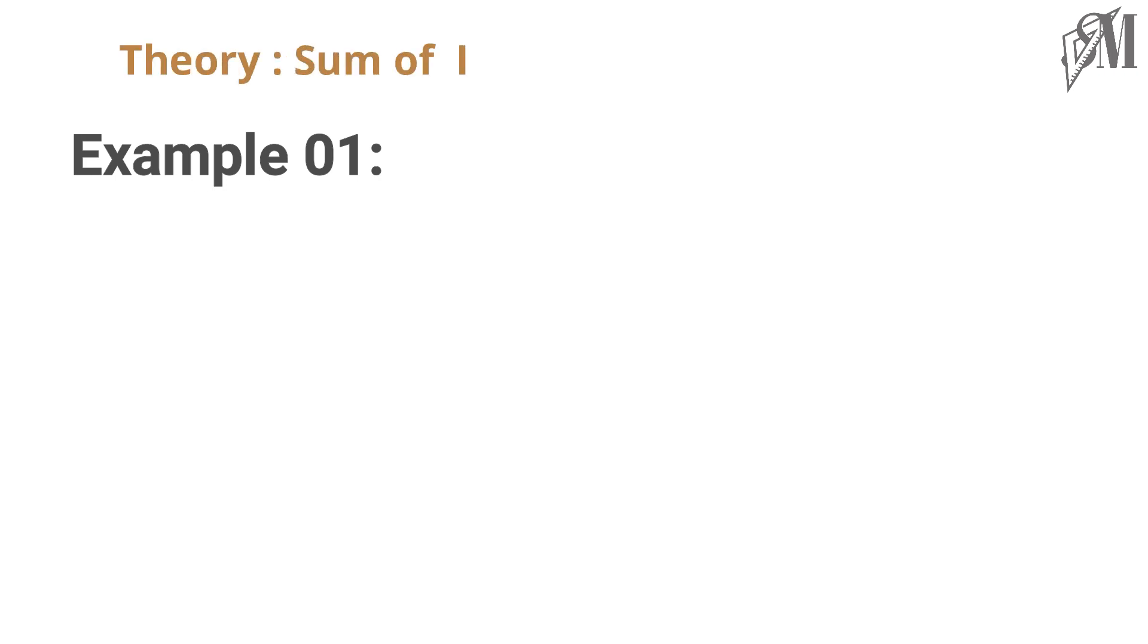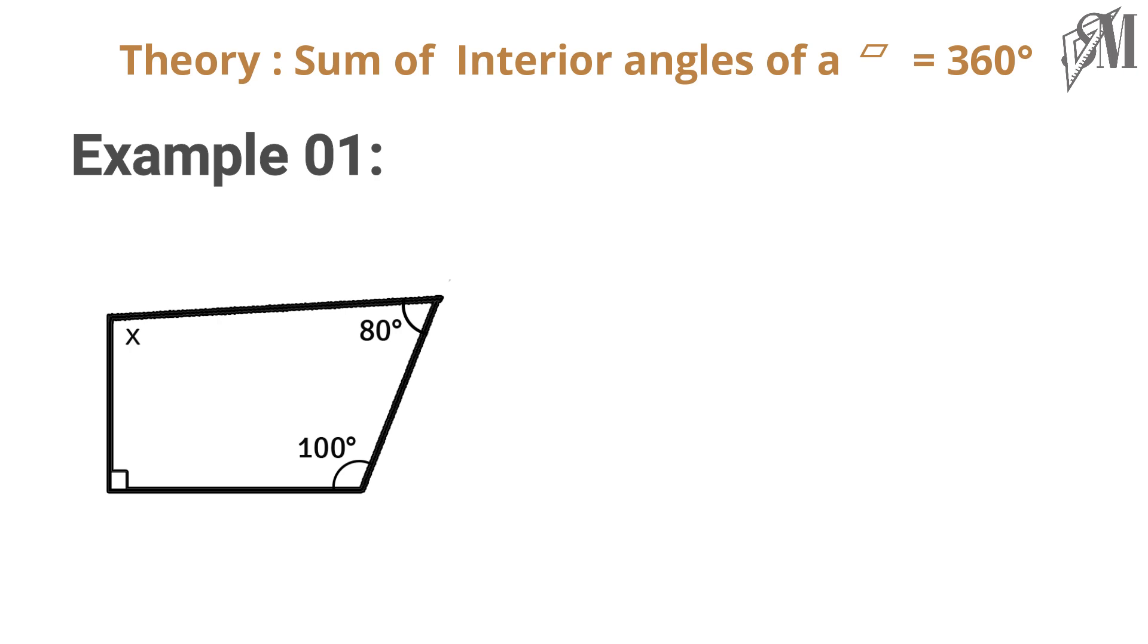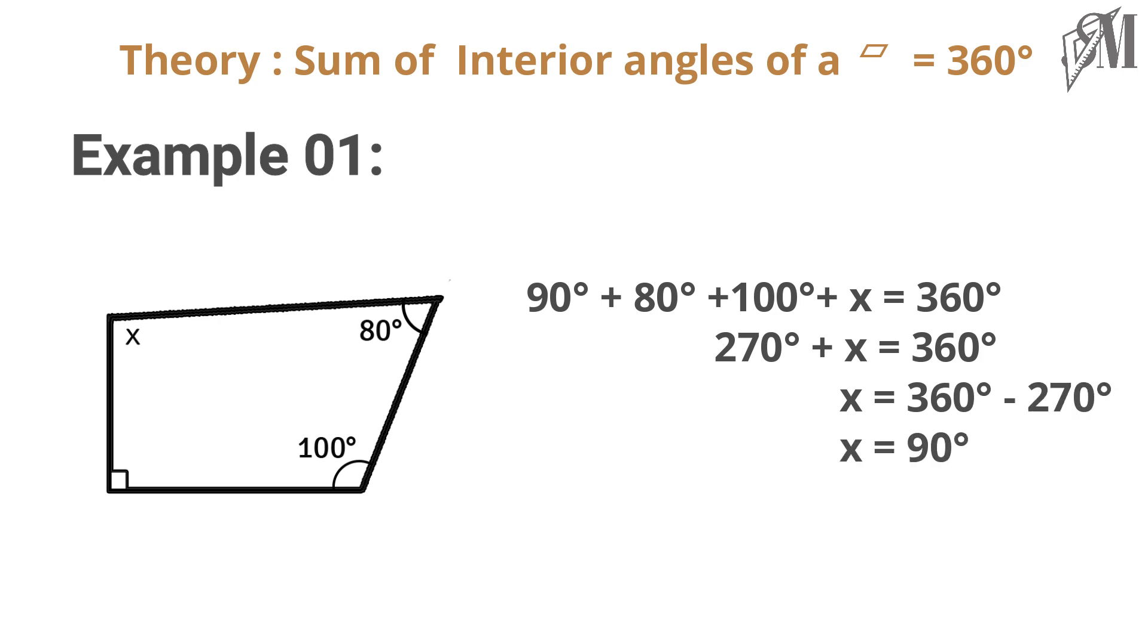The quadrilateral has one unknown angle x. So we can write 90 plus 80 plus 100 plus x is equal to 360 degrees. This gives you x is equal to 90 degrees. What about the exterior angles of a quadrilateral?